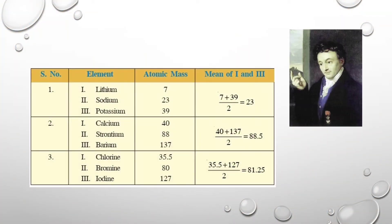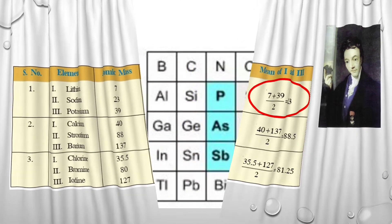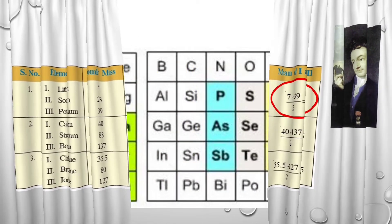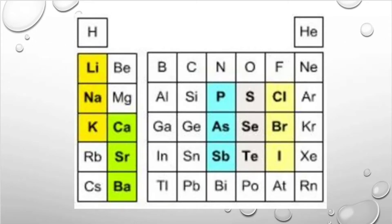If we have a look at a triad table, we can see that the atomic mass of the middle element is approximately the mean of the atomic masses of the other two elements. As this classification was a primitive step, Döbereiner could identify only some triads from the elements known. Other triads did not obey the rule, and hence the system of triads was not useful.